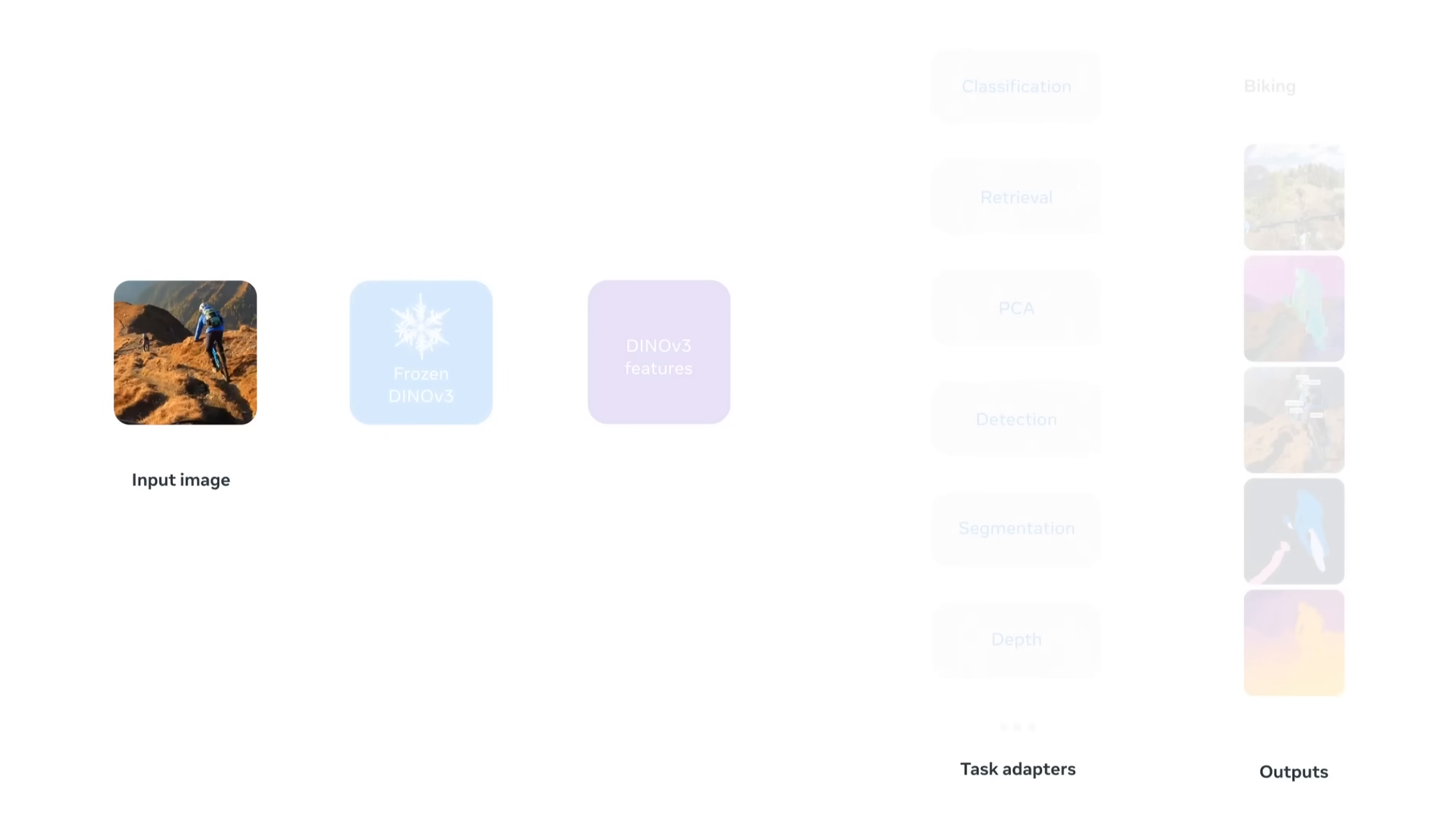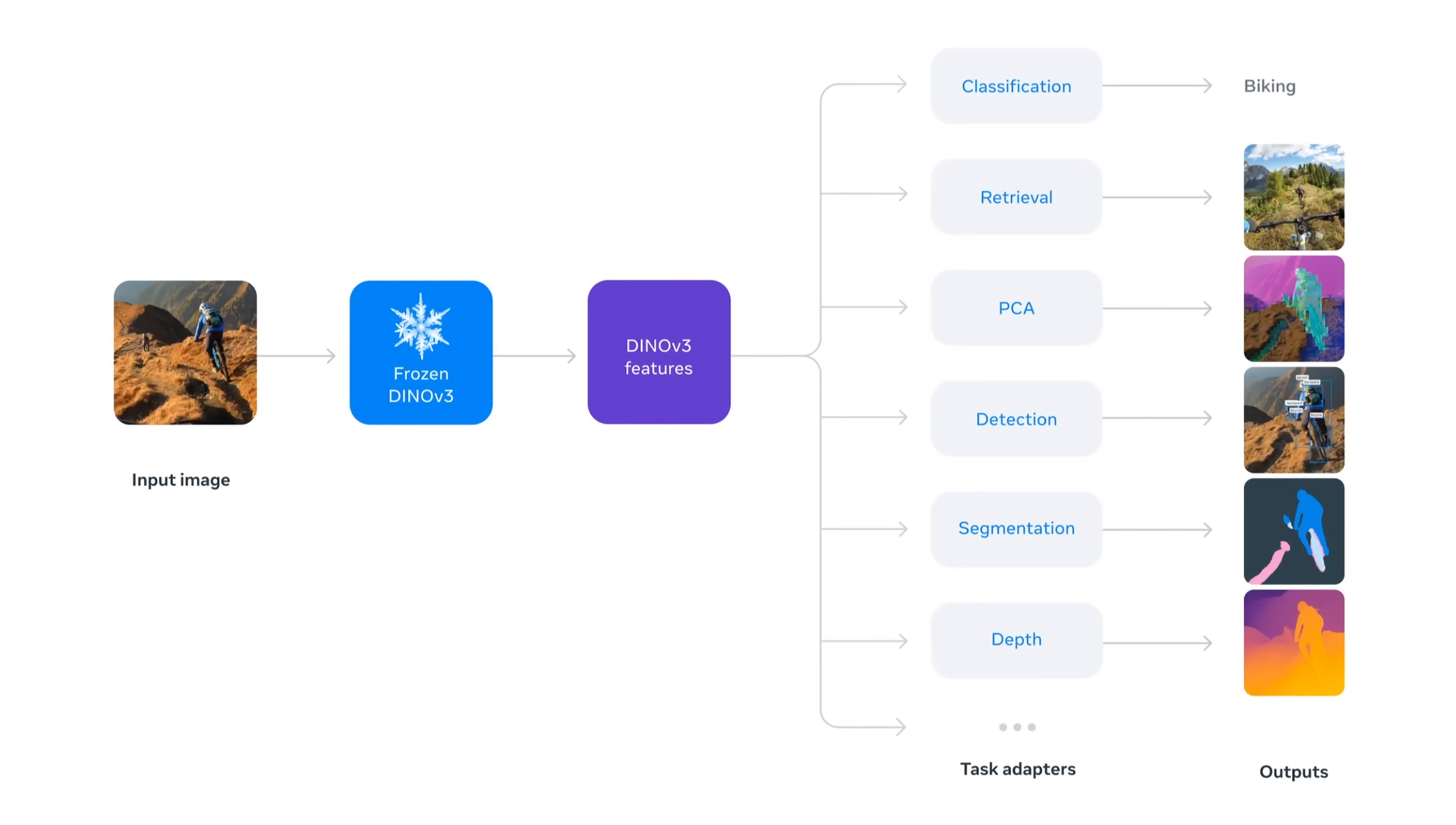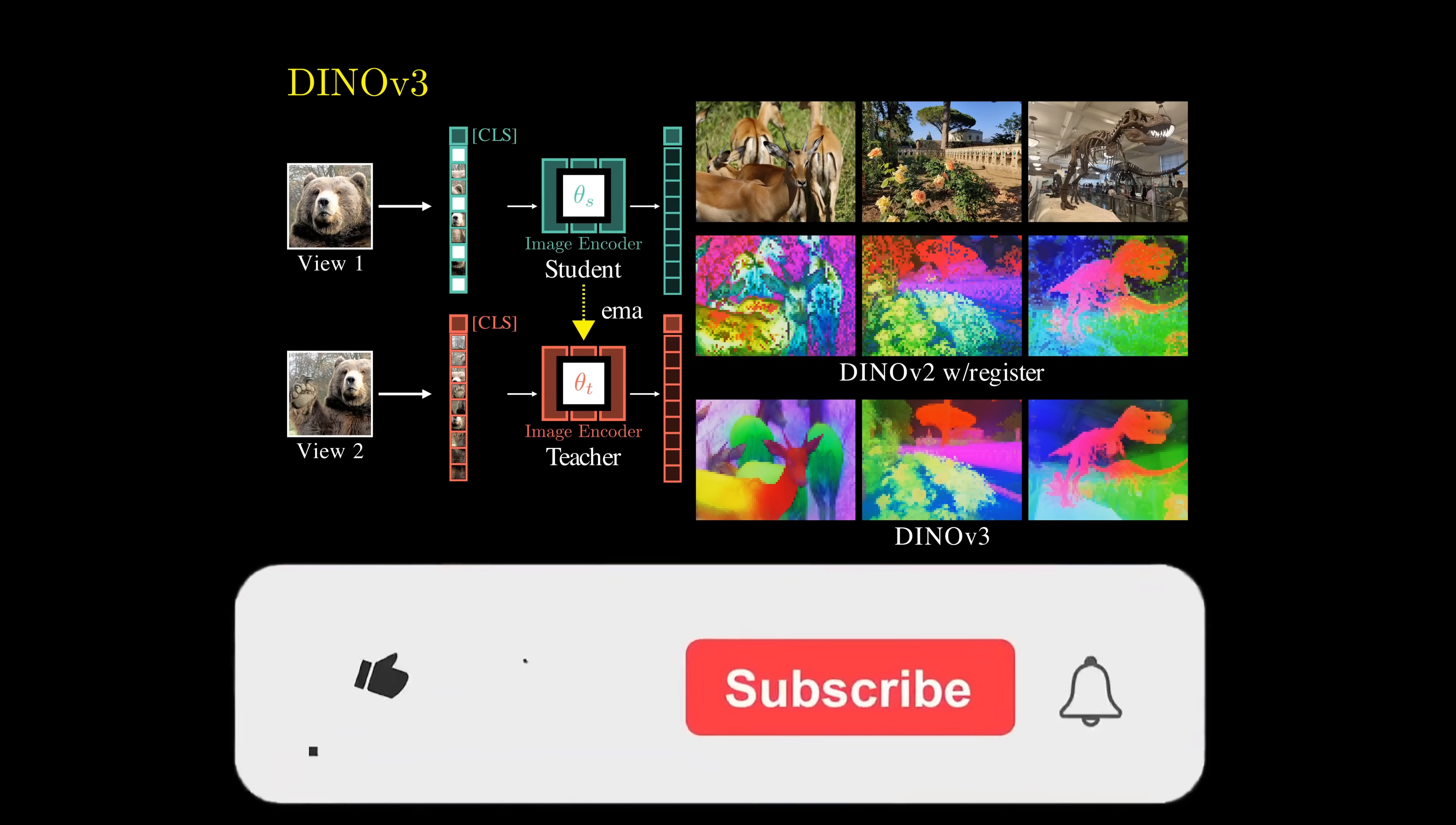Self-supervised pre-training methods like DINO make it much easier to adapt models to new tasks, requiring only a small adapter and a limited amount of label data. General-purpose visual representations open the door to a wide range of new possibilities and applications. This is an exciting time for computer vision.